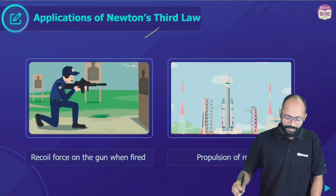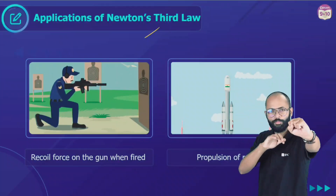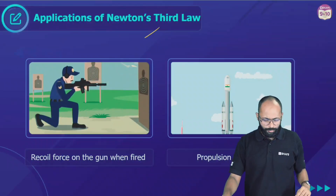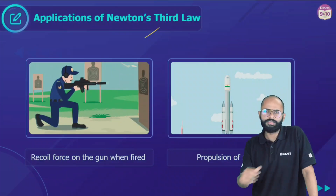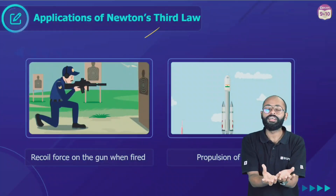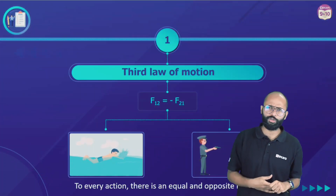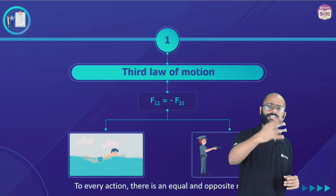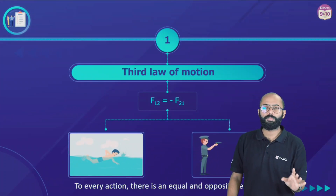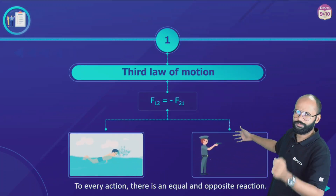Newton's third law has many applications. Gun recoil: the gun applies force on the bullet, and the bullet applies force on the gun — the gun recoils and the bullet moves forward. Rocket propulsion — like Chandrayaan recently — the rocket pushes gases downward, and the gases push the rocket upward, making it move up. Newton's third law forces are not cancelled because they are applied on different bodies; they would only cancel if both acted on the same body. If body A applies force F on body B, body B applies force F on body A — equal in magnitude, opposite in direction: F₁₂ = −F₂₁.